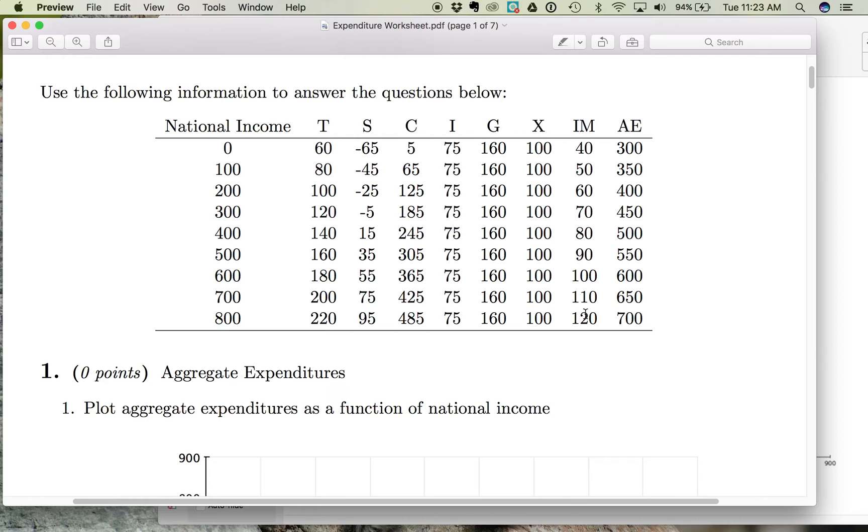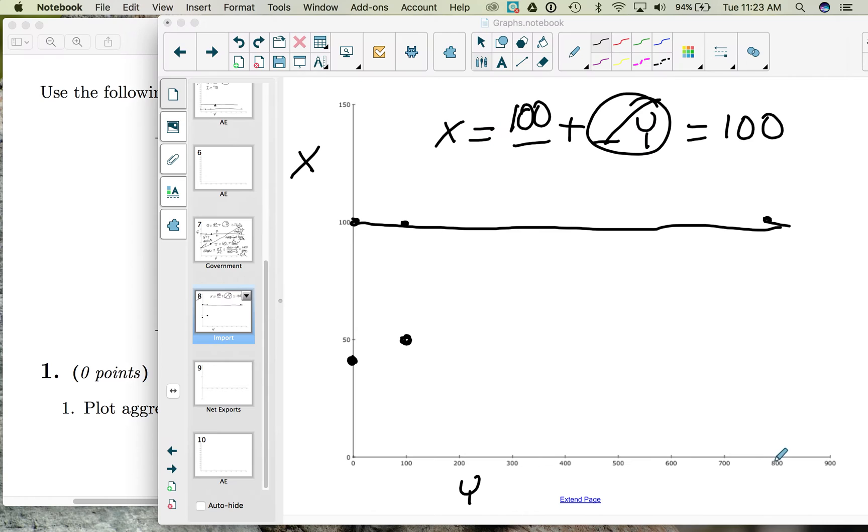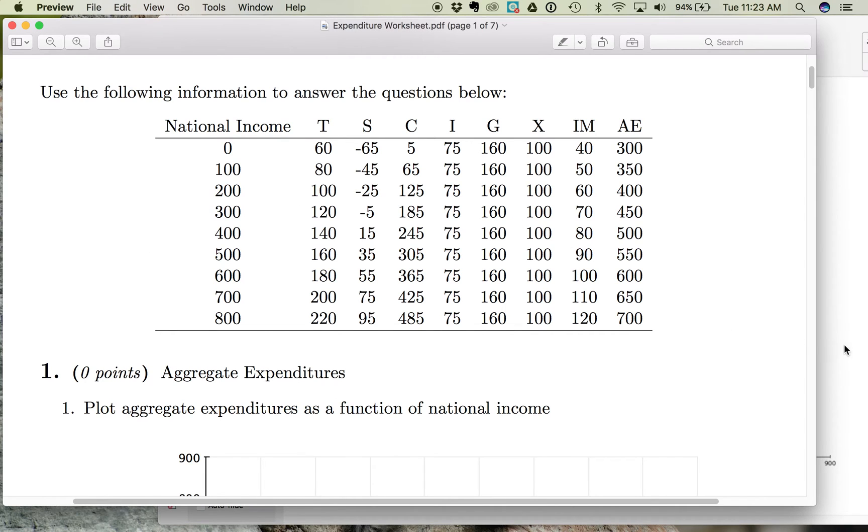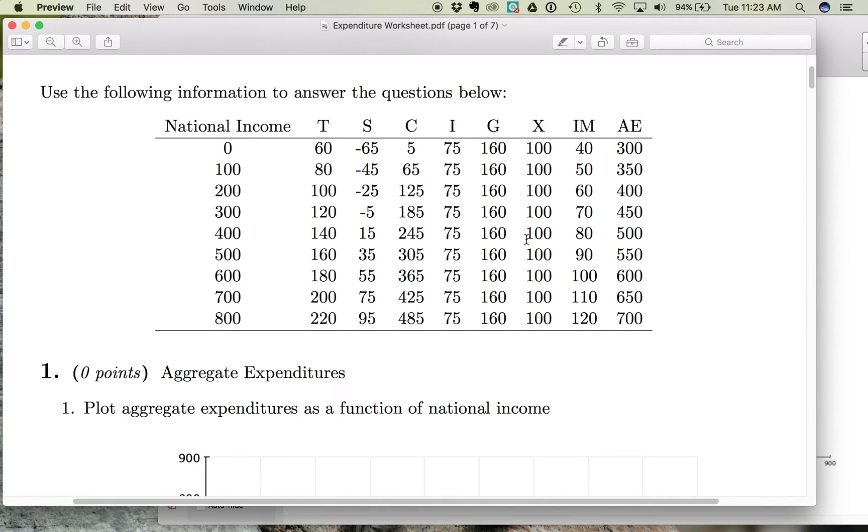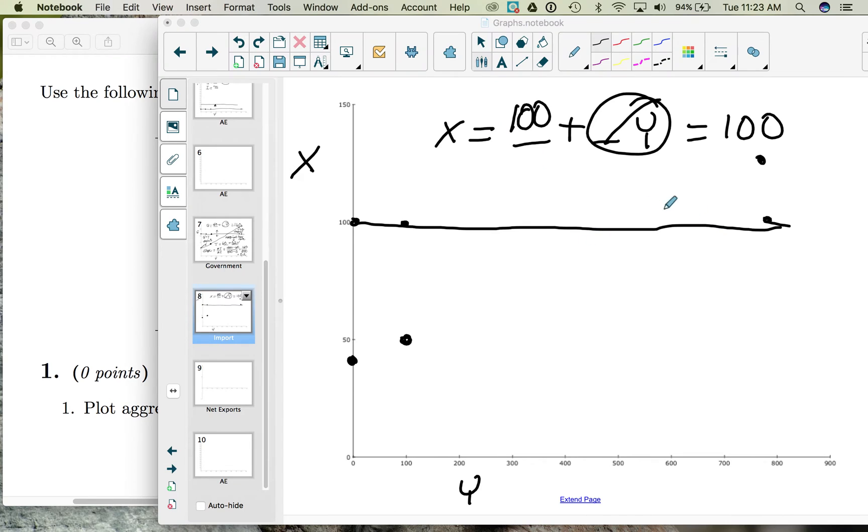Notice that import spending increases. So here we go and all the way until income is 800, then our imports are 120. So we can connect our dots for import as we go from 40 to 120.